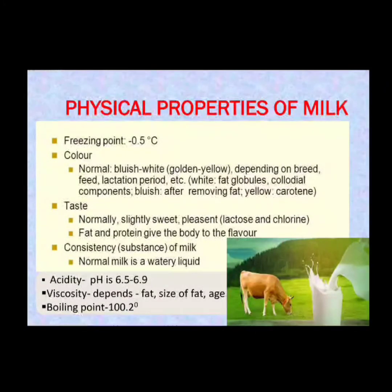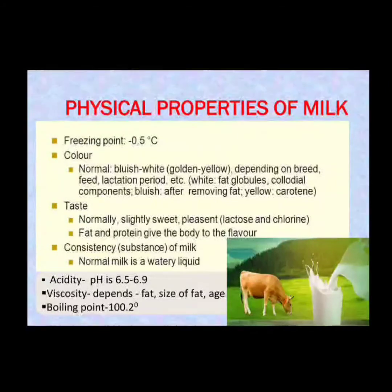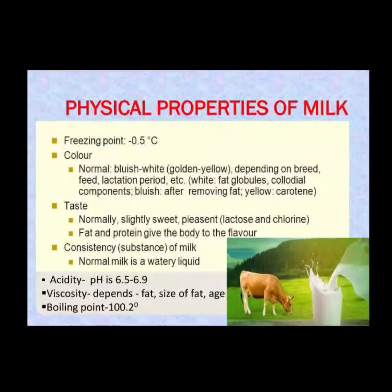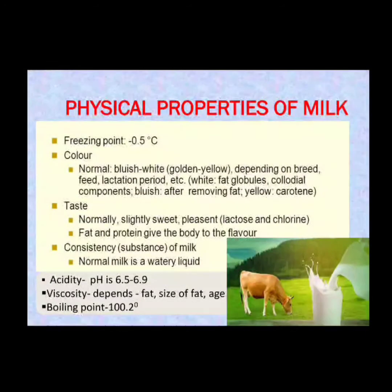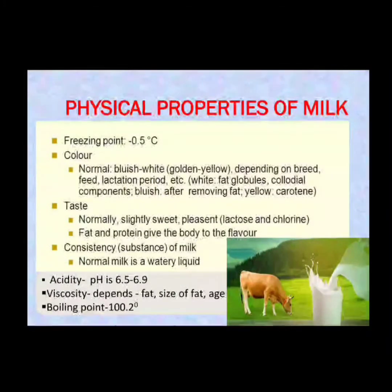Moving on to other physical properties — the color of milk is white. It can become yellowish because of the fat content; the more fat present, the more the golden-yellow color increases. If you remove the fat content, the milk has a bluish-white tinge.